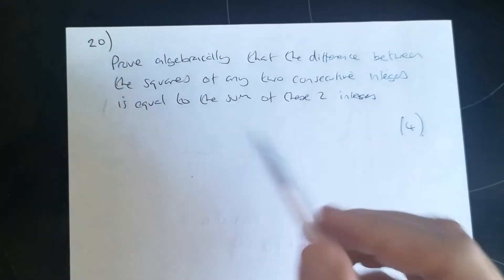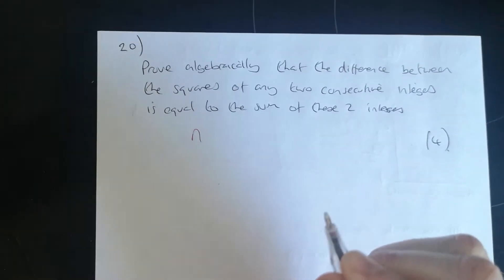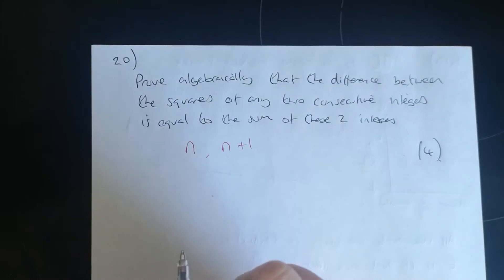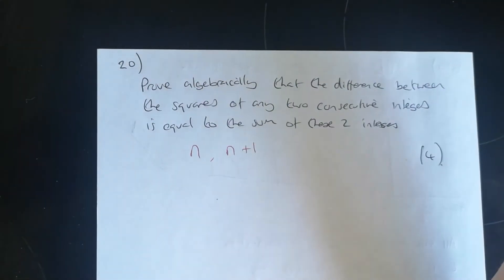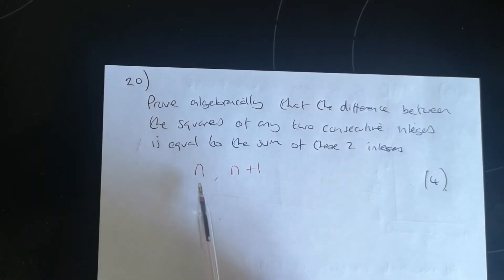Okay, so first of all, because algebraically we're going to need to think about two consecutive integers. So we've got n, and the next consecutive integer could be n plus 1. Or you could have started with n minus 1 and then had n after that. I'm going to start with n and n plus 1.